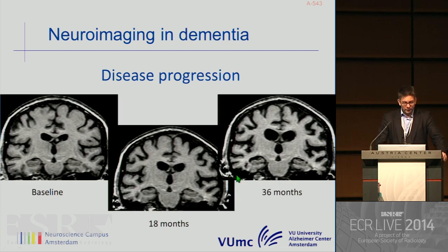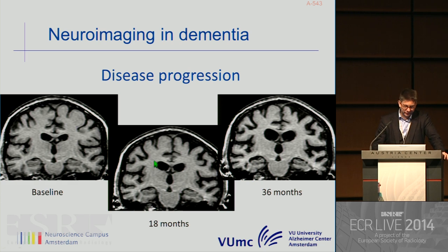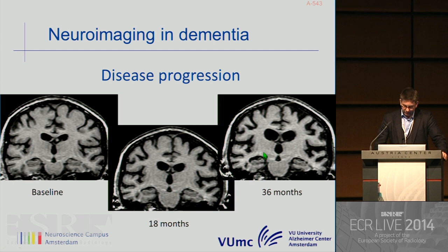Beyond this, we can also try to monitor disease progression and treatment of dementia. This is a patient coming to us at baseline with mild cognitive impairment. You can see very nicely that during follow-up the atrophy—the neurodegenerative changes—become more prominent, particularly in the medial temporal lobe but also in the global cortex, and this becomes more evident in later follow-up. You see a very nice view of medial temporal lobe atrophy, particularly on the right side, and also more pronounced global cortical atrophy.